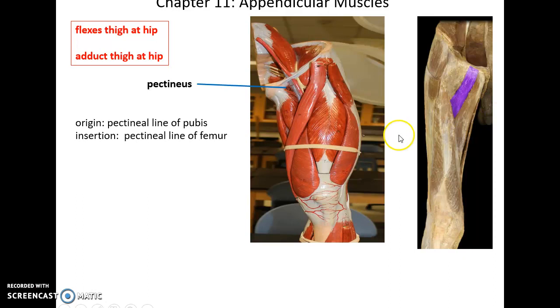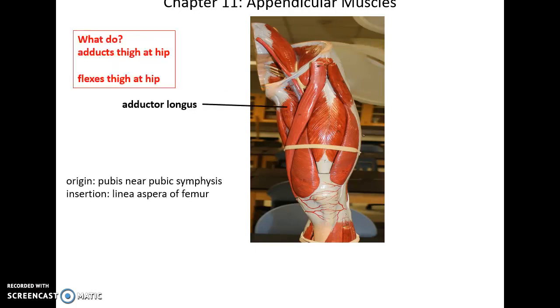Then we have the pectineus muscle here. It's a really small muscle. Its origin is the pectineal line of the pubis. Its insertion is the pectineal line of the femur. It helps to flex the thigh at the hip as well as adduct the thigh at the hip.